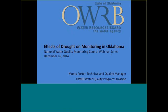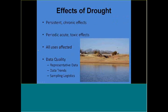I'm going to switch gears a little bit and specifically talk about drought. This particular talk only concerns Oklahoma, but I think many of the things we've seen here are indicative of other areas that have been under persistent drought in this decade. As an overview, some of the effects that we've seen are persistent and chronic, becoming cumulative over time. But you also have certain acute toxic effects that are cumulative — more the collateral effect that I spoke about earlier.